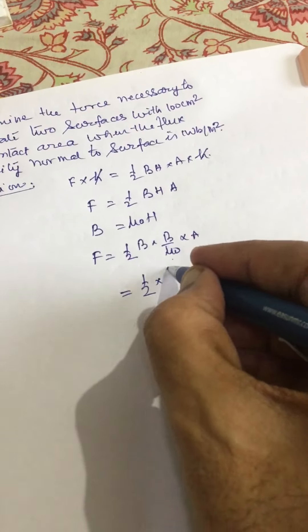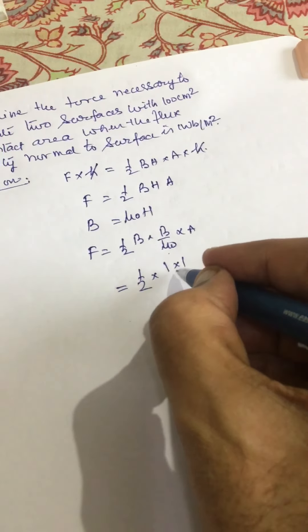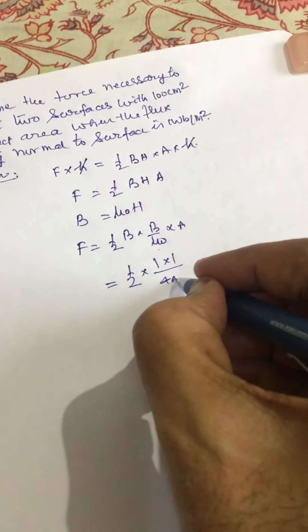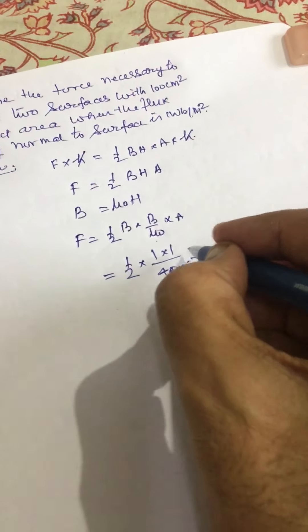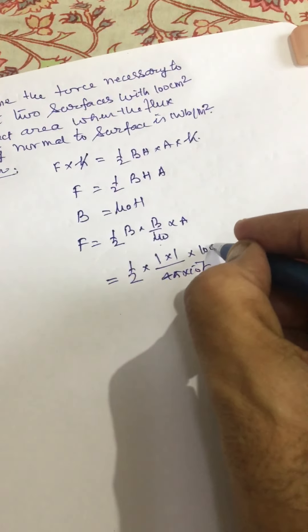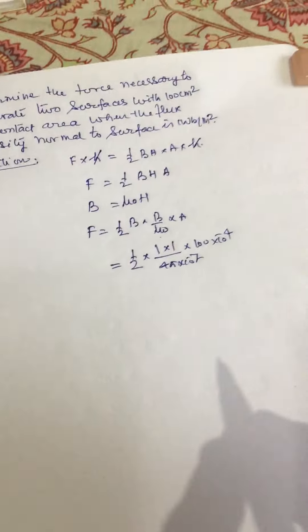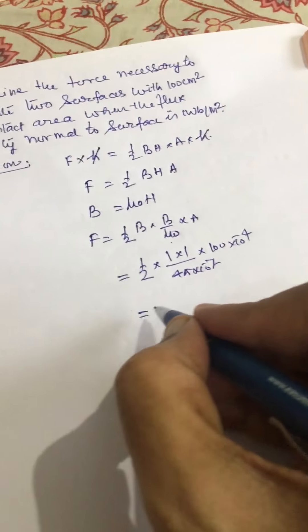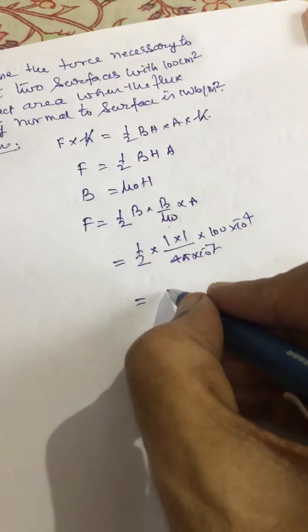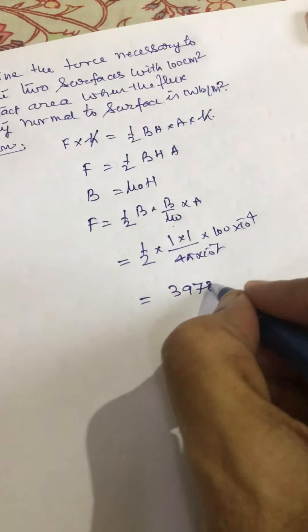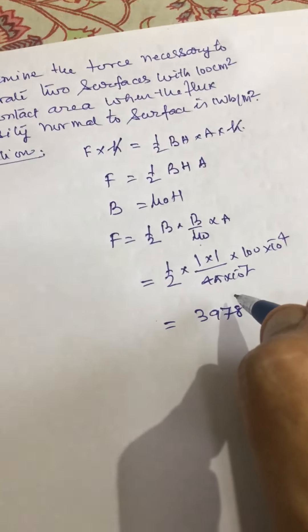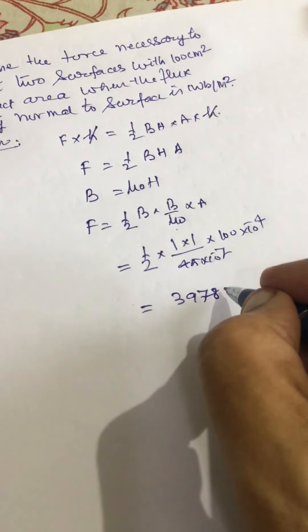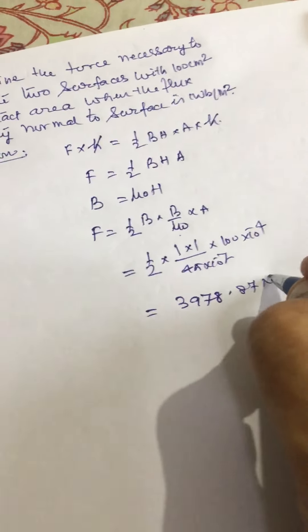B is 1 weber per meter square, and μ₀ is 4π × 10⁻⁷, and area is 100 cm² which is 10⁻² meter square. By solving this we get the force as 3978.7 newtons.